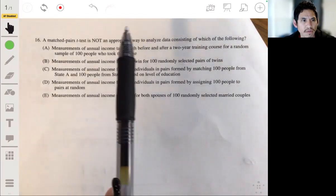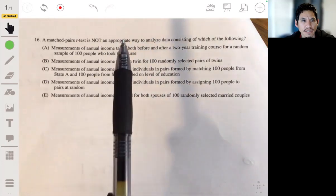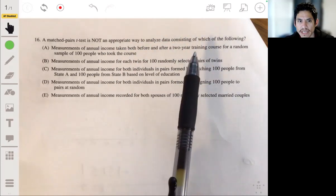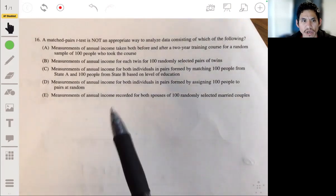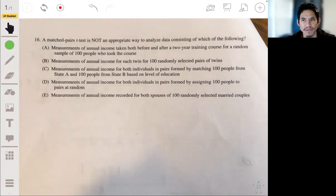Problem 16: A matched pairs t-test is not an appropriate way to analyze data from which of the following? So we need to figure out which of these matched pairs t-tests would not work for. To review what a matched pairs t-test really is used for, it's essentially when you want to test the effects of something, maybe like you're testing some drug, maybe some energy drink.